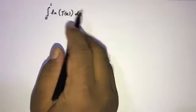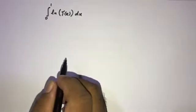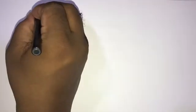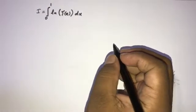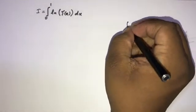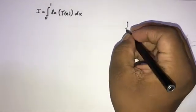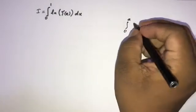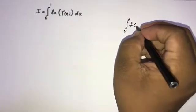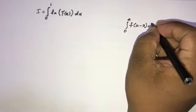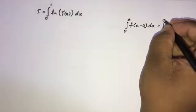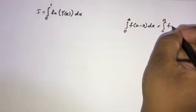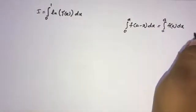Okay, how to start? First, I am going to take this equal to I, and we know this property of integration: the integral from 0 to a of f(a minus x) dx is equal to the integral from 0 to a of f(x) dx.